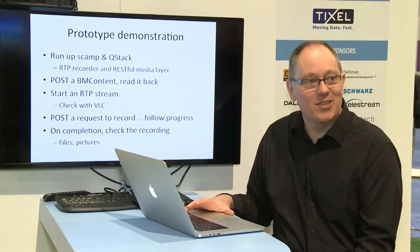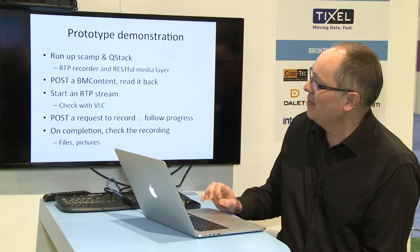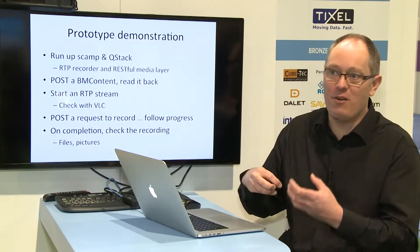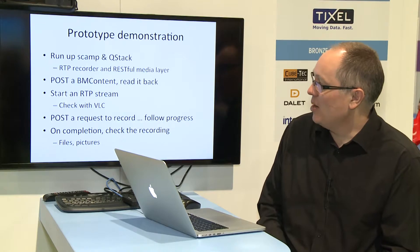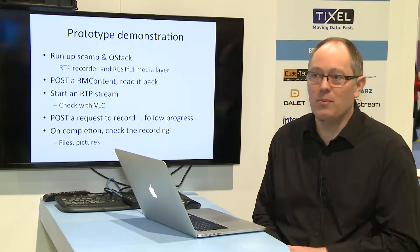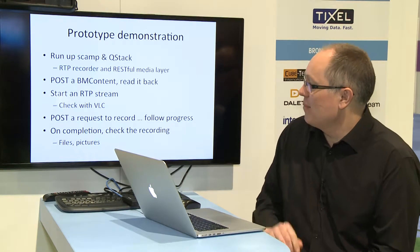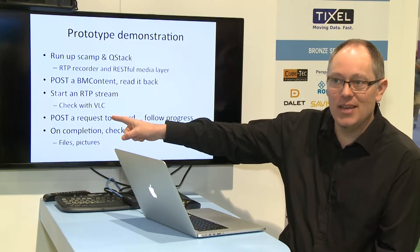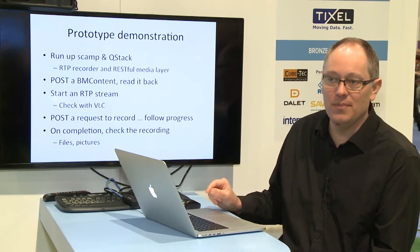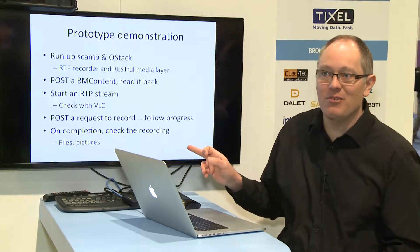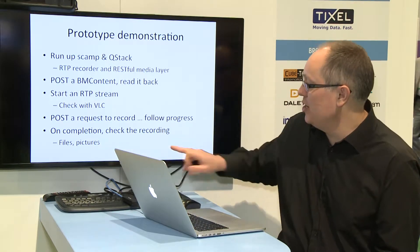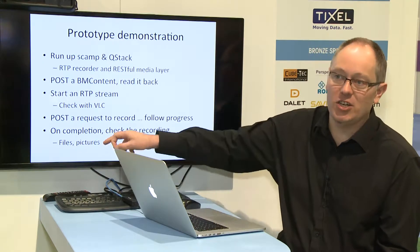Now I'm going to attempt a prototype demonstration. I'll run up the SCAMP tool on the RTP recorder and our software stack called QStack, which is our software-only broadcast server. I'll post a BM content and read it back to show limited repository service support in our REST API. Then I'll start an RTP stream, check it plays with VLC, post a request to record that RTP stream, follow the progress of that record using the FIMS API, and on completion check the FIMS job and verify I've actually got files on disk.